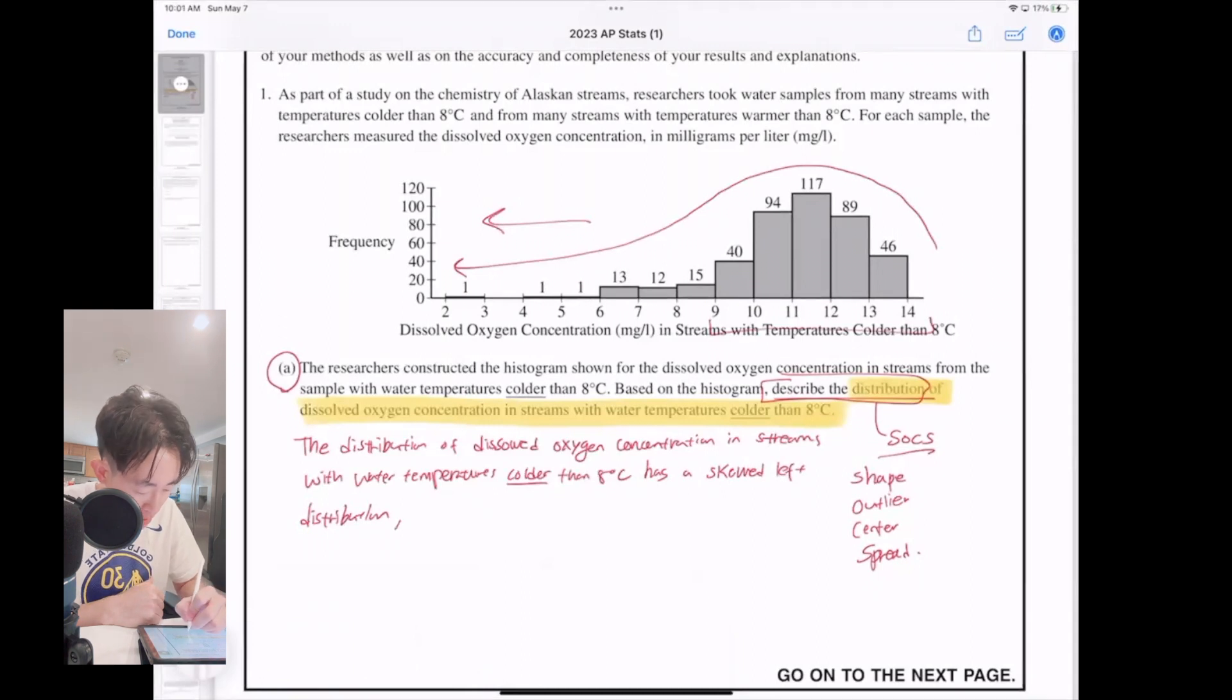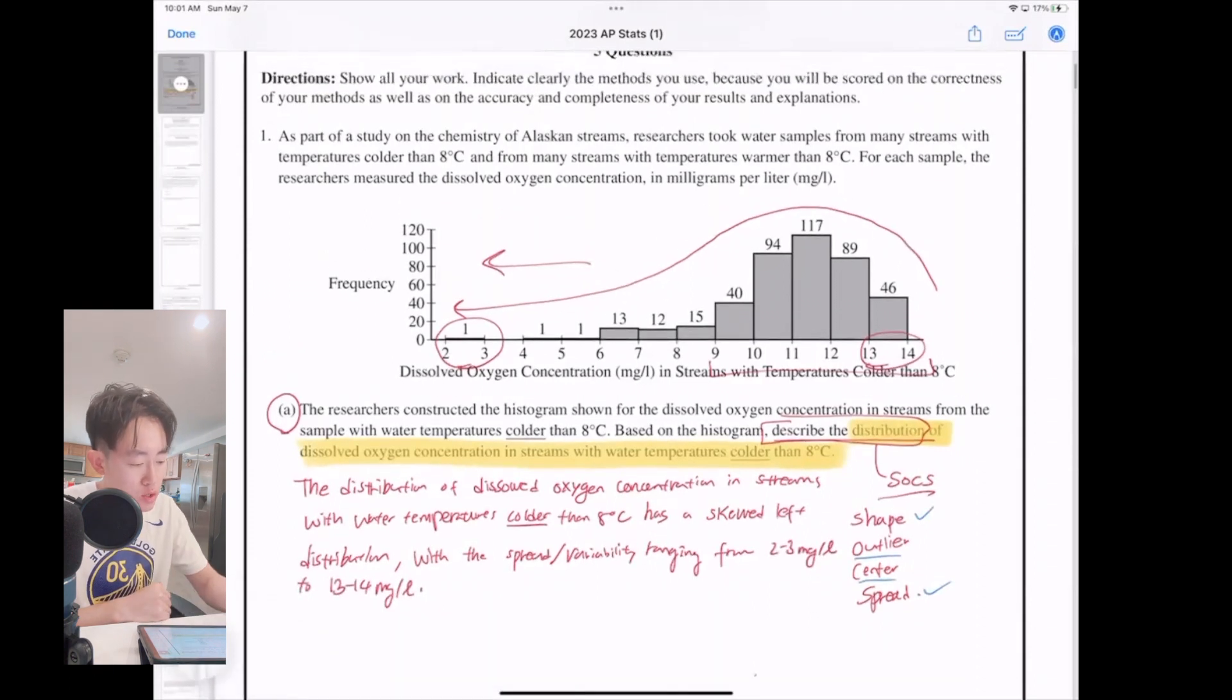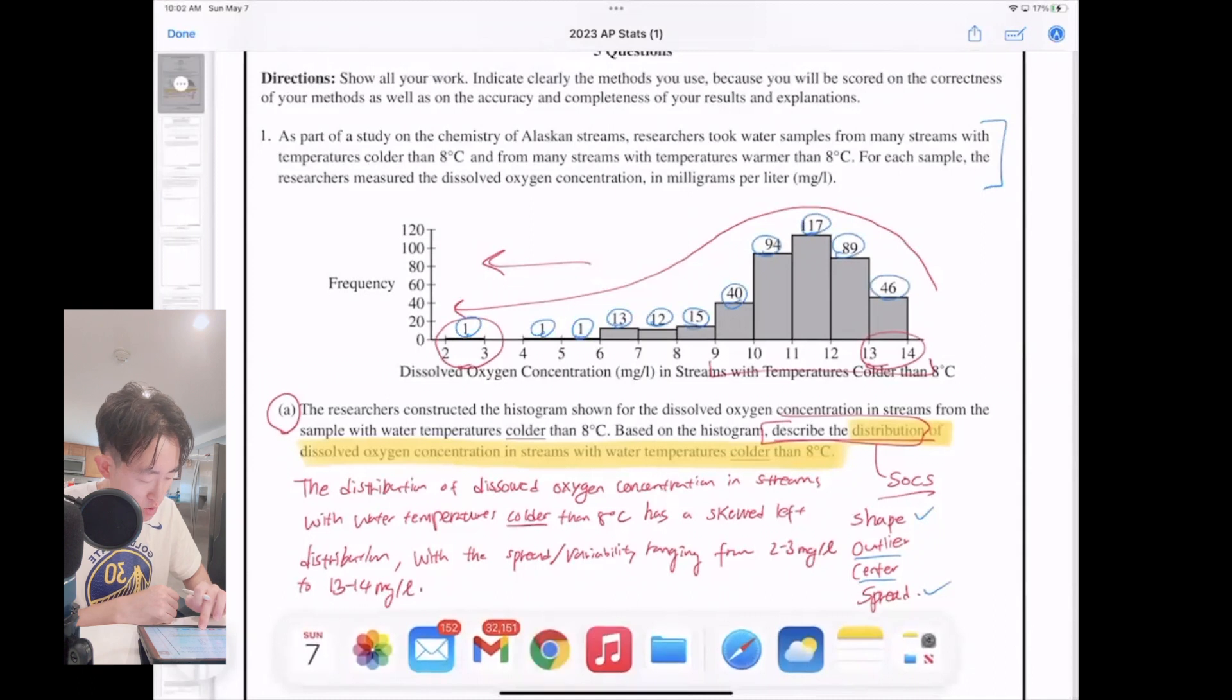So this would be a skewed left distribution with the spread or variability ranging from this to this. Now there's no specific values for those histograms, so you actually have to say that it's between 2 to 3 milligrams per liter and 13 to 14 milligrams per liter. So that would be your minimum and the maximum will be from 13 to 14. So essentially what we have done here is that we have done shape and spread. We have to do outlier and center. Now the unfortunate thing is usually at the top they will sometimes tell you how many the frequency is in total. They don't tell you that, so you actually have to add up all of these frequency numbers together. That will total to somewhere around 420 something. But we will use our calculator to do that for us.